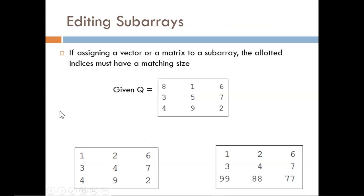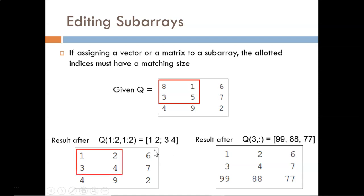We can also assign a specific matrix or vector to a subarray, as long as the sizes match up. This idea is clarified with examples. Again, we'll start with the same matrix Q. In the first example, we are selecting the first two rows and the first two columns, which is a 2x2 matrix. The matrix assigned to take its place must also be a 2x2 matrix. In this case, it is, so the 1, 2, 3, 4 is filled in appropriately.